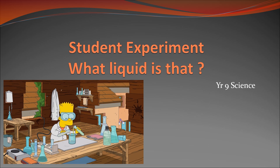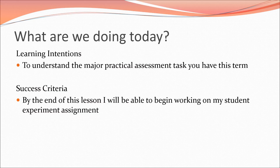Welcome to the Grade 9 experiment. This term we're doing a student experiment as our major assignment for the term, where you have to identify some unknown samples that you've been given based on the reactions that we've done in class. The purpose of this video is to understand the major assessment task you've got to do this term. By the end of this, you should be able to begin working on your planning for your student experiment.